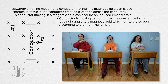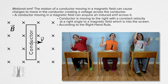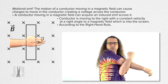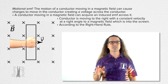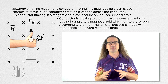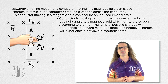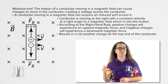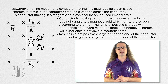According to the right-hand rule: fingers point to the right with the velocity of the charges, curl fingers into the screen with the magnetic field, and the thumb points upward toward the top of the screen. That means positive charges will experience an upward magnetic force and negative charges will experience a downward magnetic force.